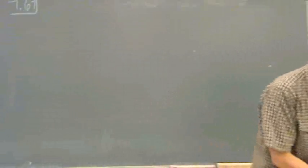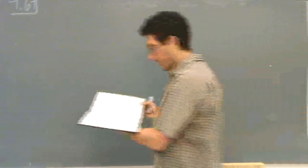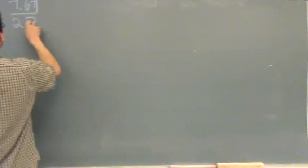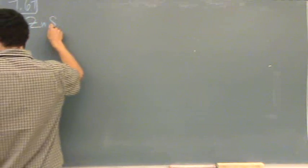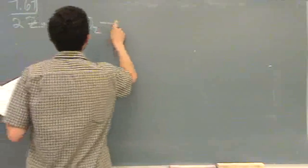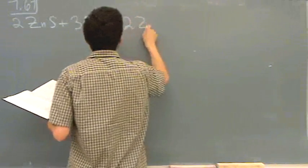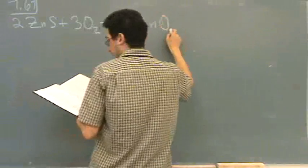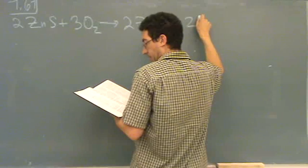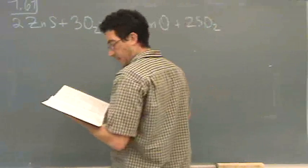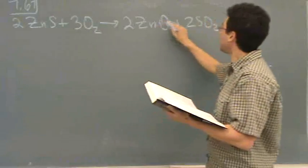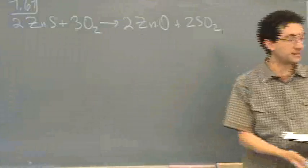The reaction is 2 zinc sulfides plus 3O2 goes to 2 zinc oxide plus 2 sulfur dioxide. And you need to know the state. So it's solid gas, solid gas, because it's different.